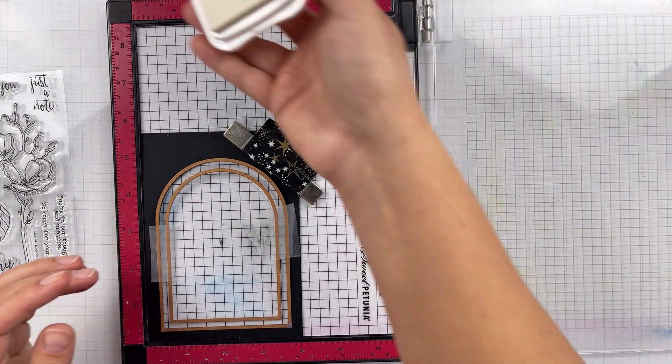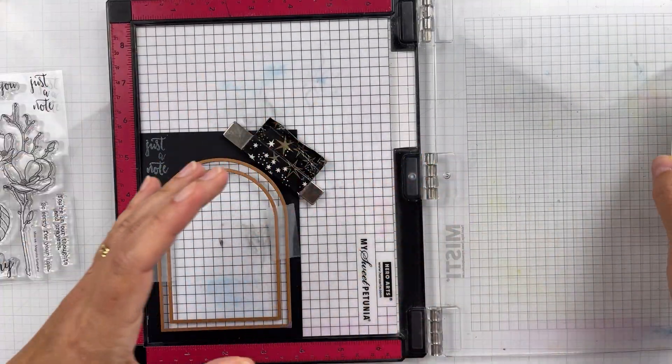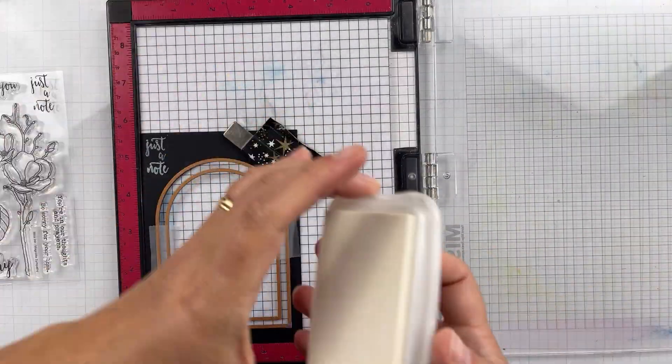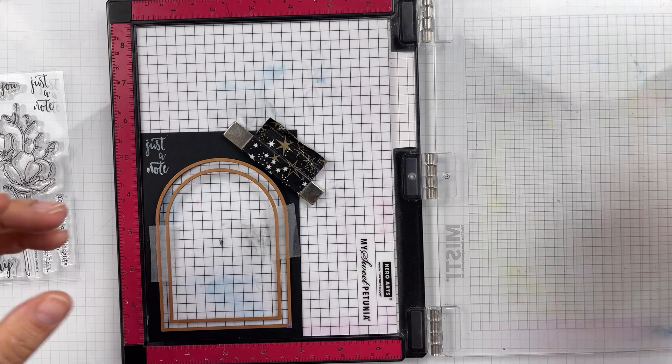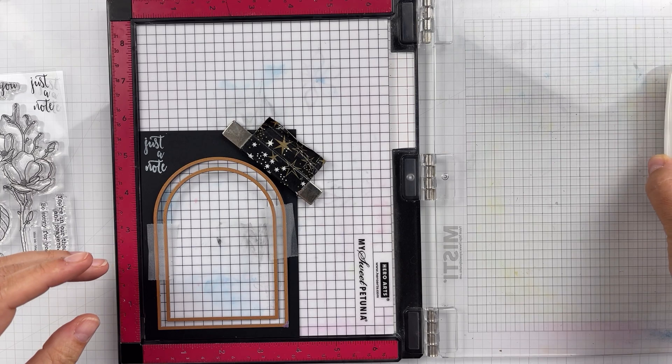And I'm just using a little piece of the cardstock from the arches frame that I cut out with the Just a Note. And I used the Brilliance Moonlight White Pigment Ink for that sentiment. And then just took some scissors and trimmed it out.